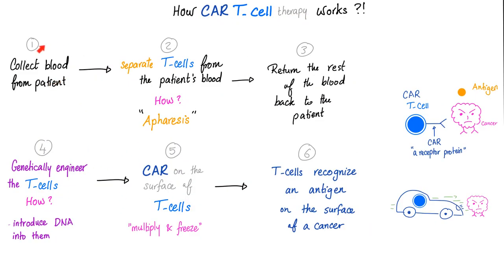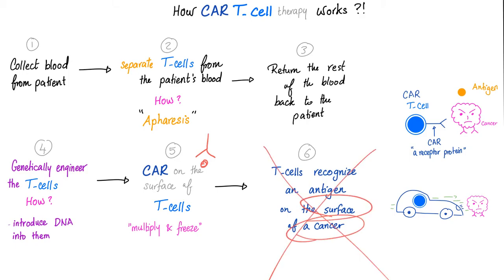How does it work? First, you get blood from the patient. Just take the T-cell, separate the T-cells and return the rest of the blood back to the patient. How do you separate it? It's called apheresis — the word pharesis means combine, so apheresis means no combination, i.e. separation. Then you genetically engineer the T-cell — introduce the receptor. And then the receptor will be able to recognize the antigen on the surface of the cancer. Now the cancer is history.